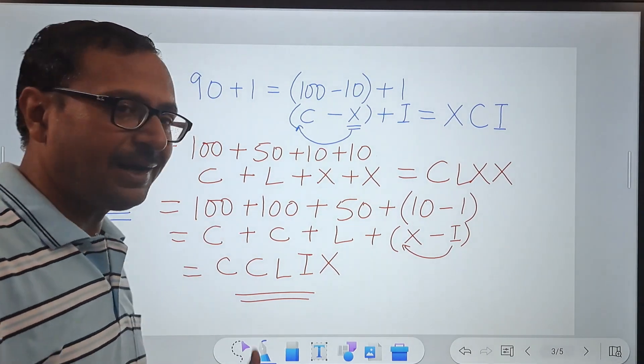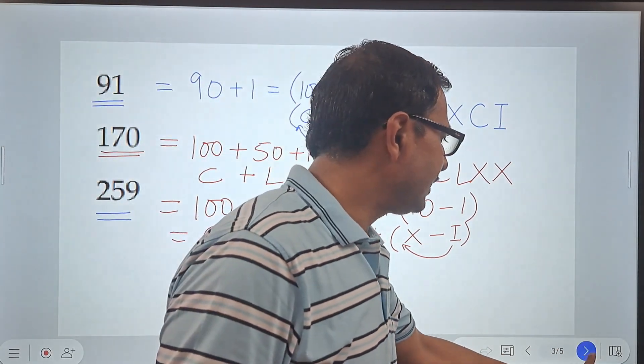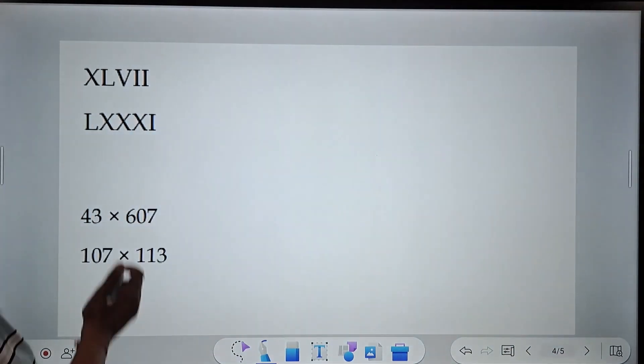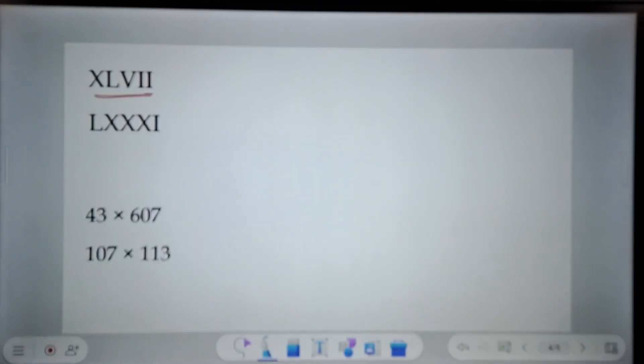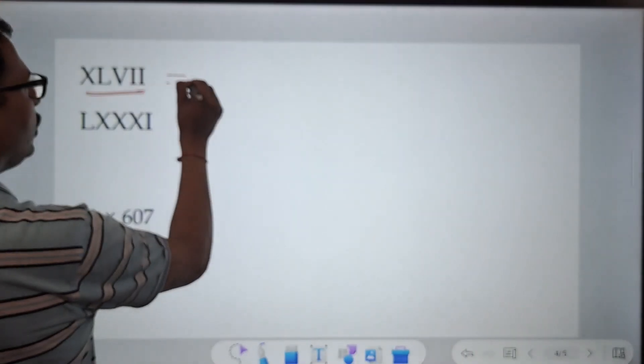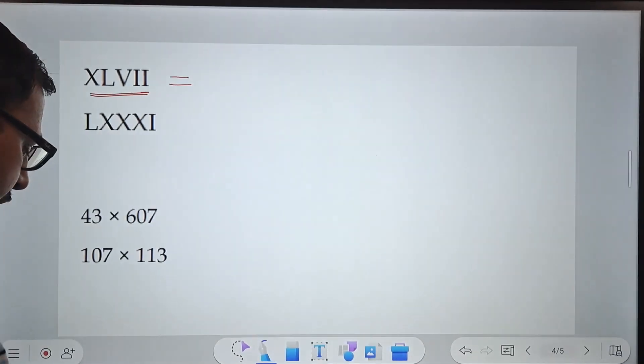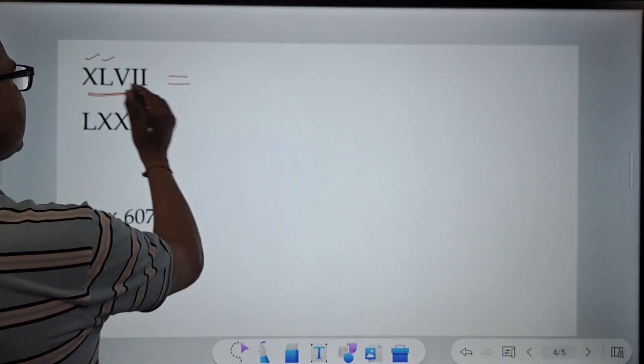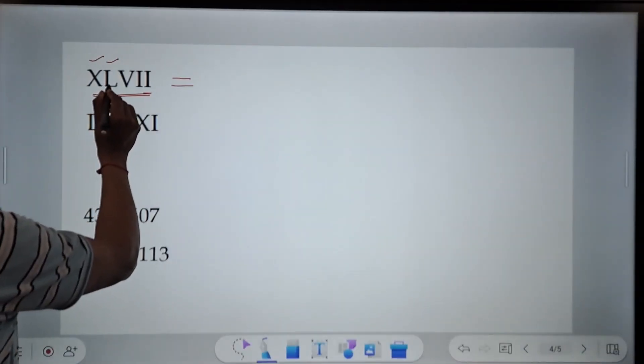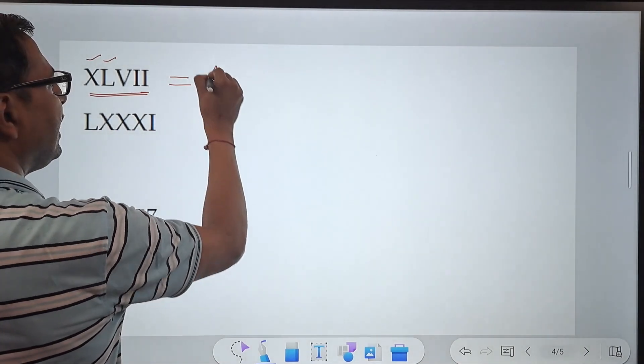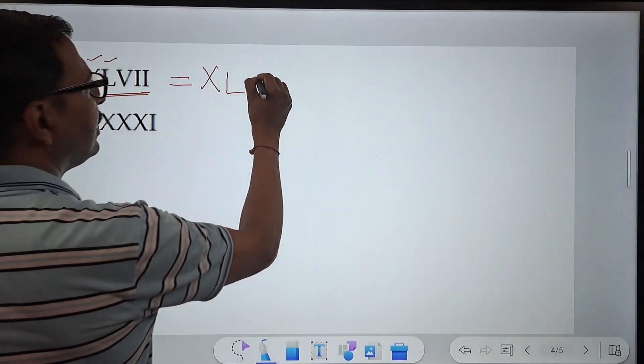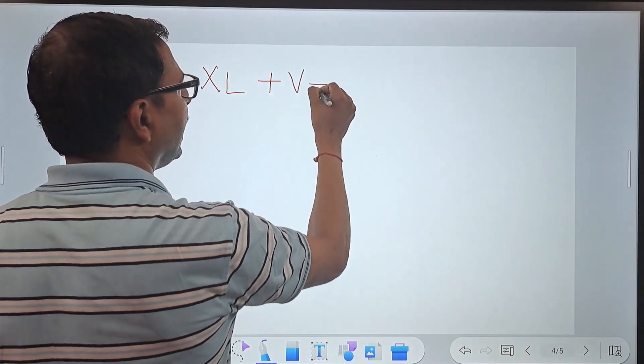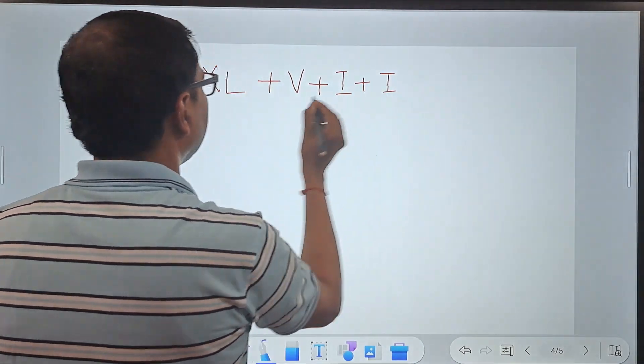Very interesting, right? And very easy also. Let's see the other way round. If you have a Roman number given here, XLVII, which you have to convert in terms of the number, the numeral. You have to write the number for this. What do you do here is, this is XL. X is 10 and L is 50. So this XL is to be written together. And V plus I plus I.